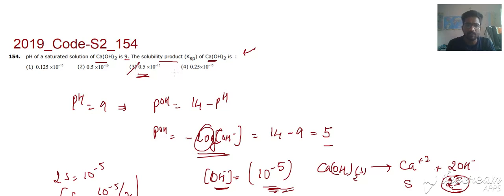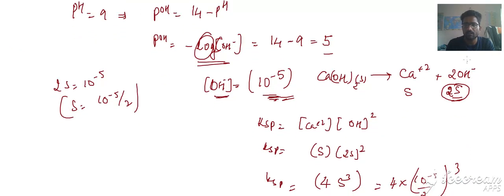The answer is 3. I hope this question is clear. The only trick point here is 2 OH minus, that is equal to 2s is equal to 10 power minus 5, so we have to halve it. S is Ca plus 2. Thank you very much.